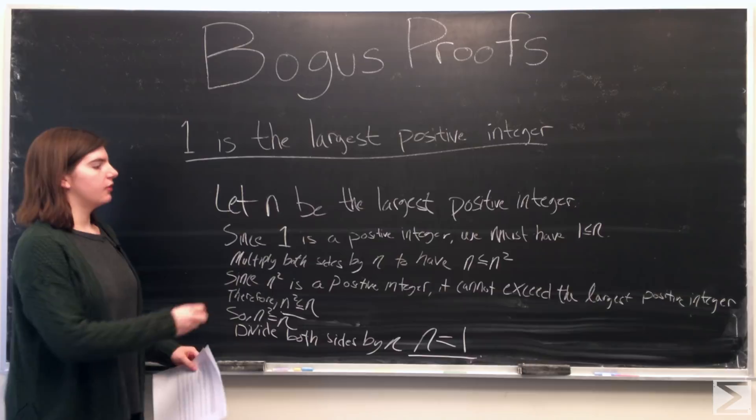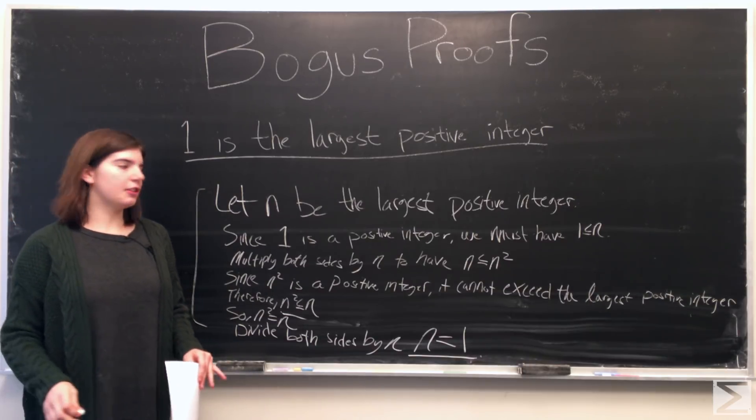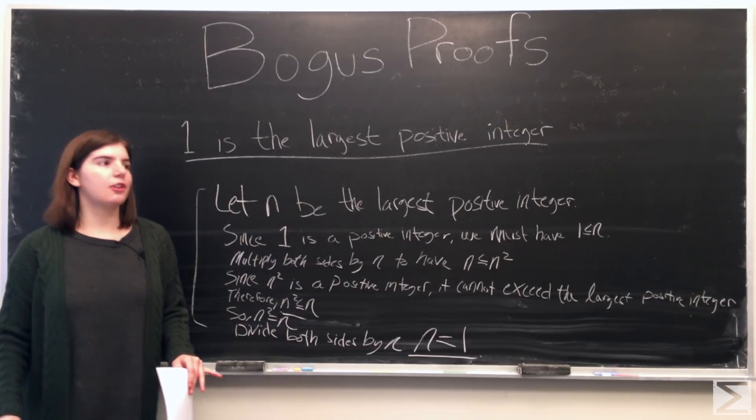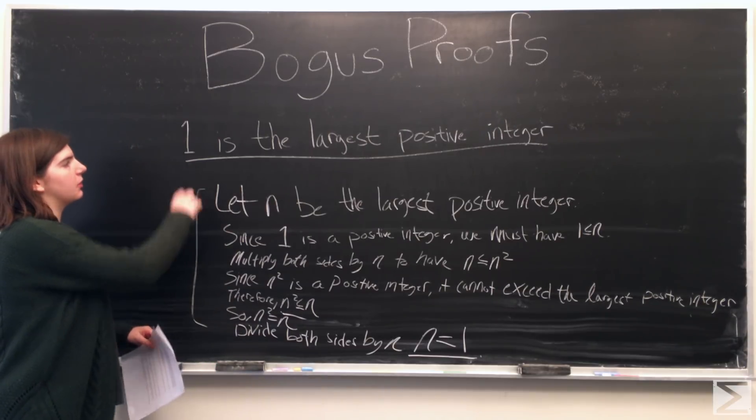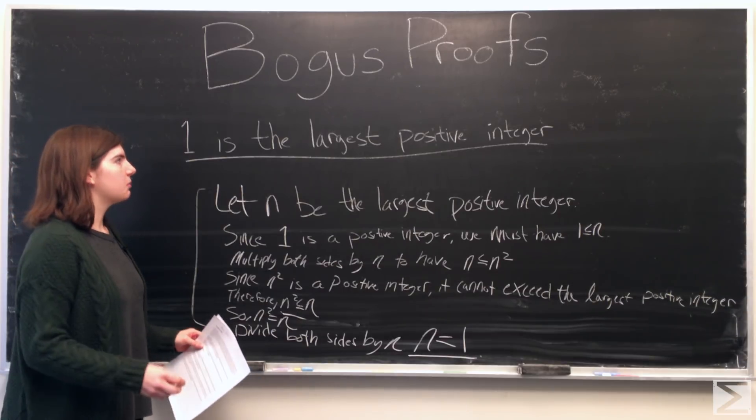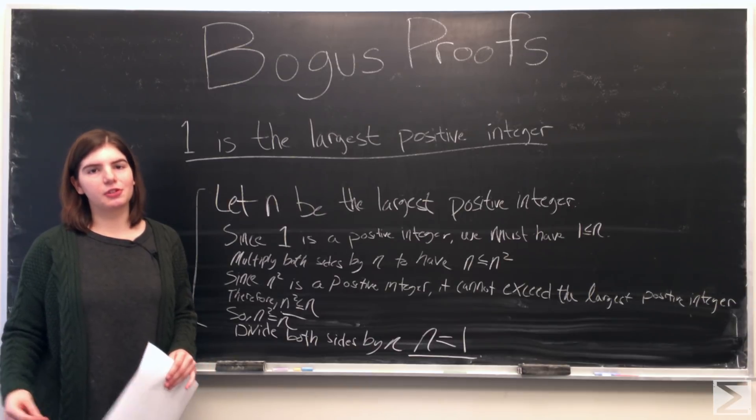So the proof, our steps, they are actually right. They're all logically sound and the math is right. Where we went wrong is our statement: 1 is the largest positive integer. What this actually means is a largest positive integer exists and it's equal to 1.